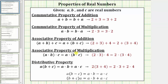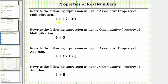The associative property of multiplication involves changing the grouping within a product. Notice in the given product, we have parentheses or grouping symbols around the five times six. Applying the associative property of multiplication, this is equal to the quantity four times five times six.